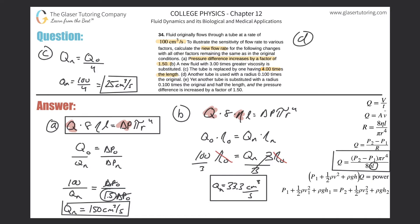Letter D says another tube is used with a radius 0.1 times the original. However the radius changes — and it's going down to essentially 10% of the original value, reduced by about 90% — then Q will go down to 10% of the original value raised to the fourth power. Don't forget that.